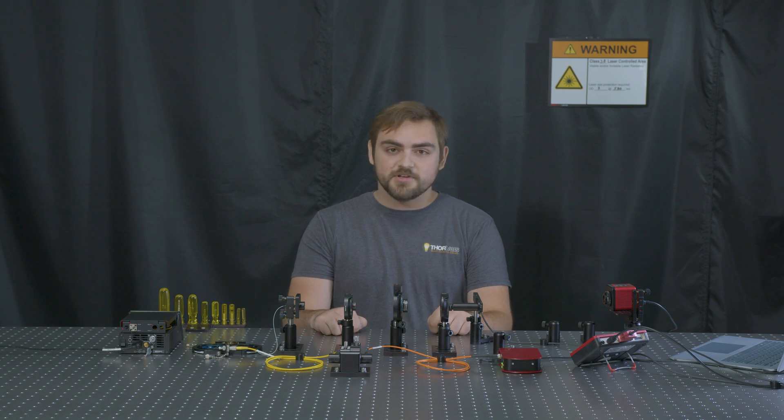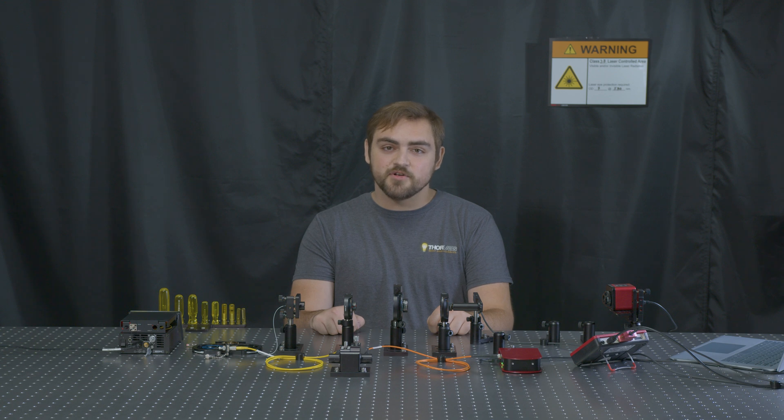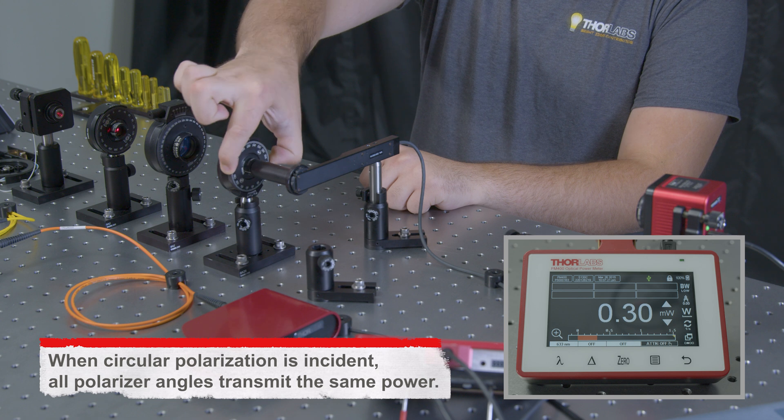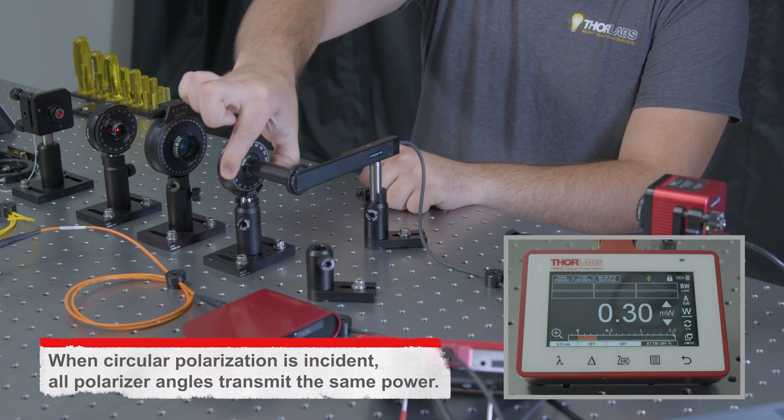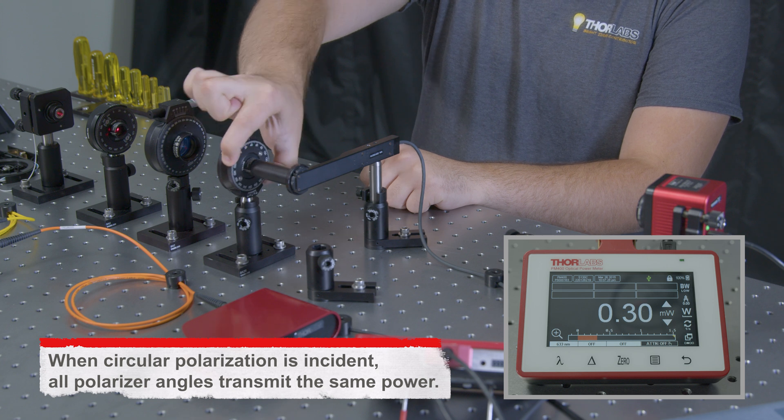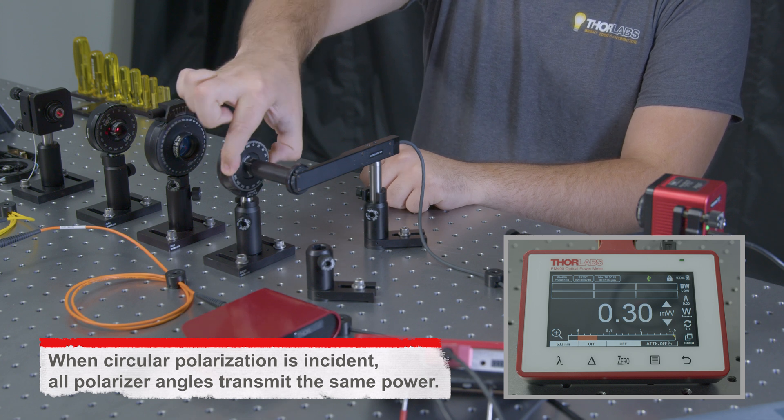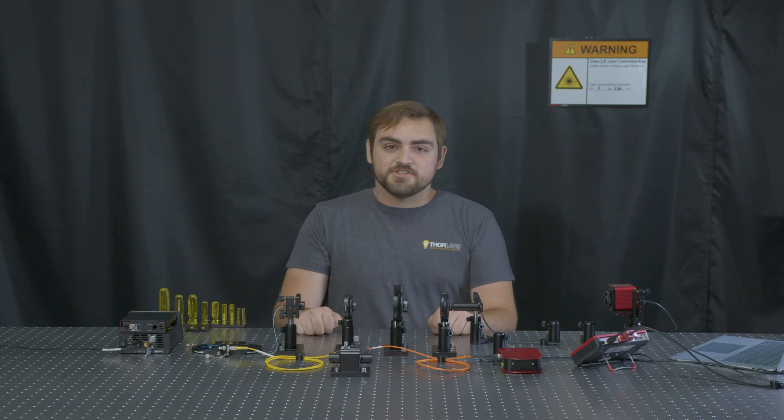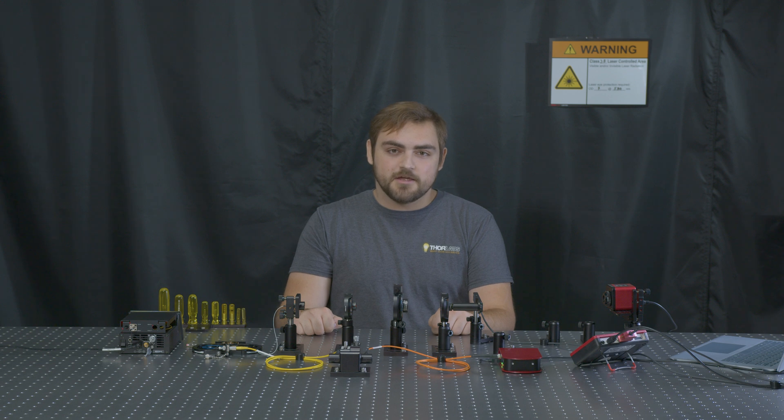Again, we can check this by rotating the analyzing polarizer 360 degrees, where we should see no real power change. If there is still a change in power, we can continue to iteratively tweak the temperature until the power does remain the same. We can confirm our results again by swapping in our polarimeter.